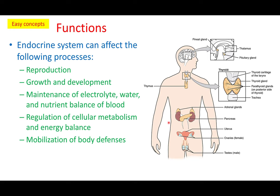The endocrine system affects several physiological processes like reproduction, growth, maintenance of electrolyte and nutrient balance, regulation of cellular metabolism, and mobilization of body defenses. All of those are physiological processes that get affected or stimulated by the endocrine system.